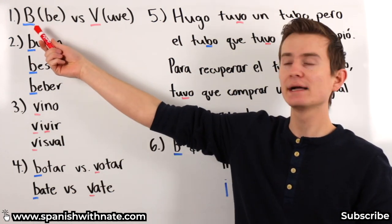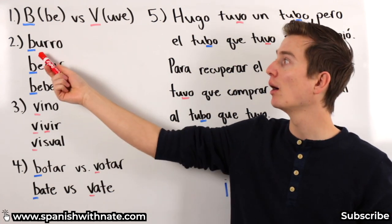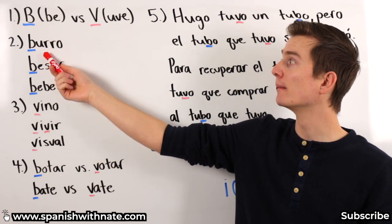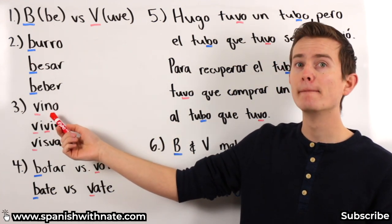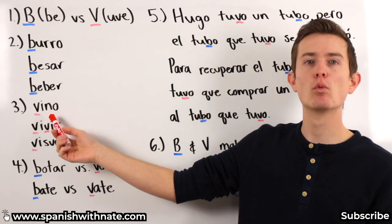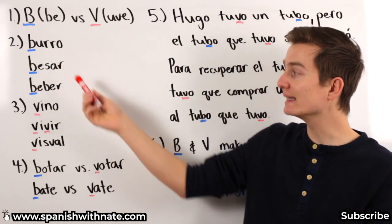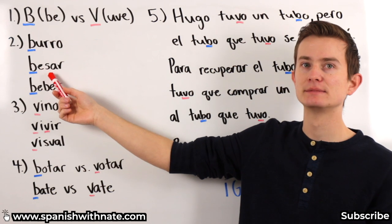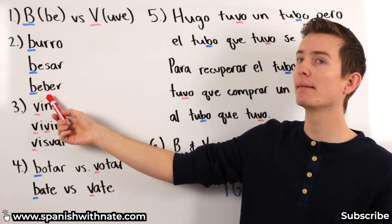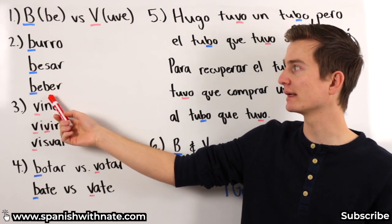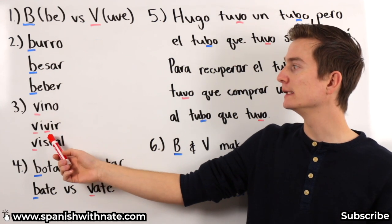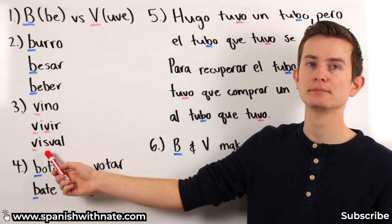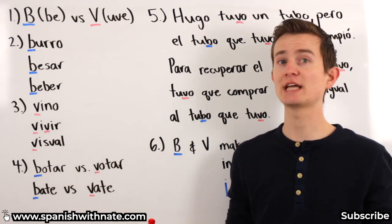Something that's actually going to help you make your accent sound better and be easier to understand native Spanish speakers. B, V — the exact same sounds. Burro — that means donkey. Vino — this could mean wine, but it could also mean 'he came' or 'she came.' Besar — to kiss. Beber — to drink. Vivir — to live. Visual. Same exact sounds here.